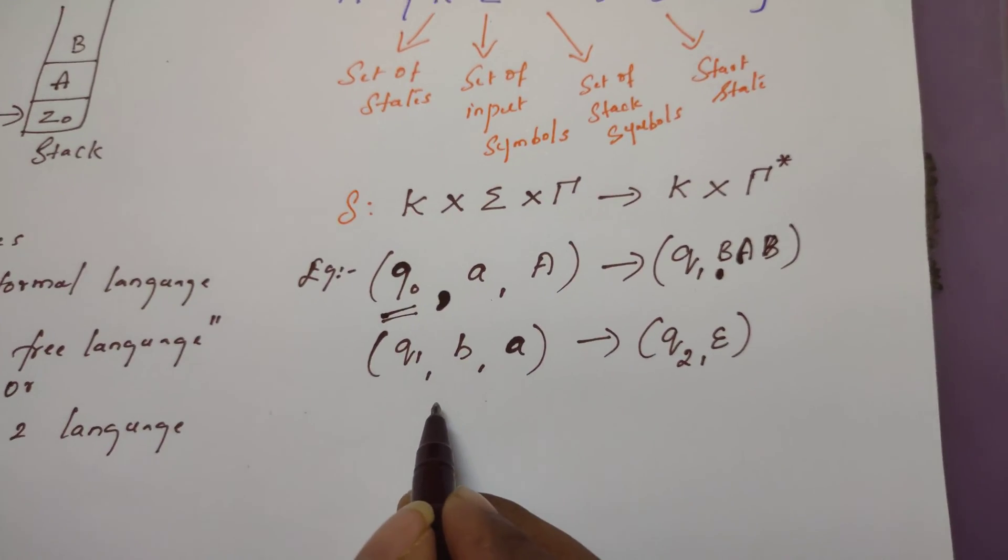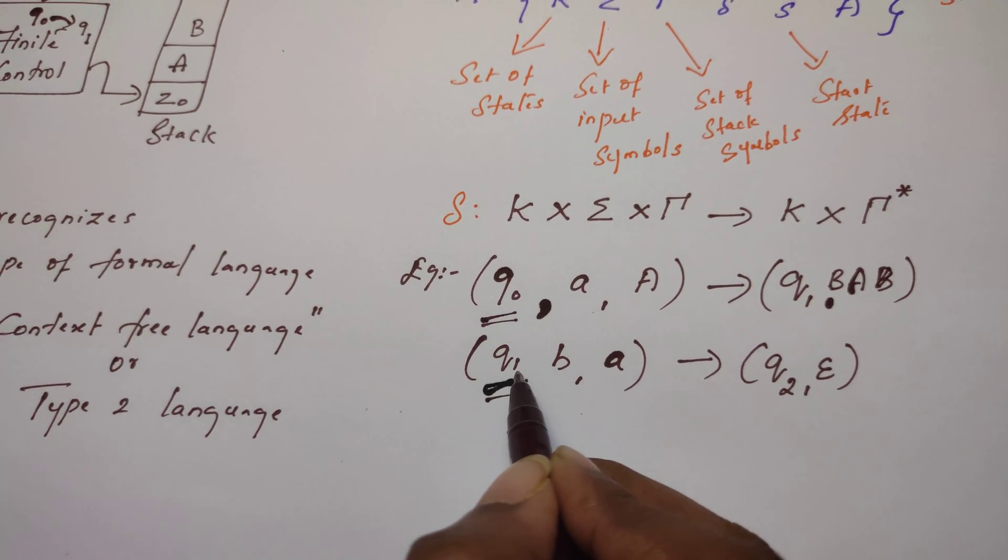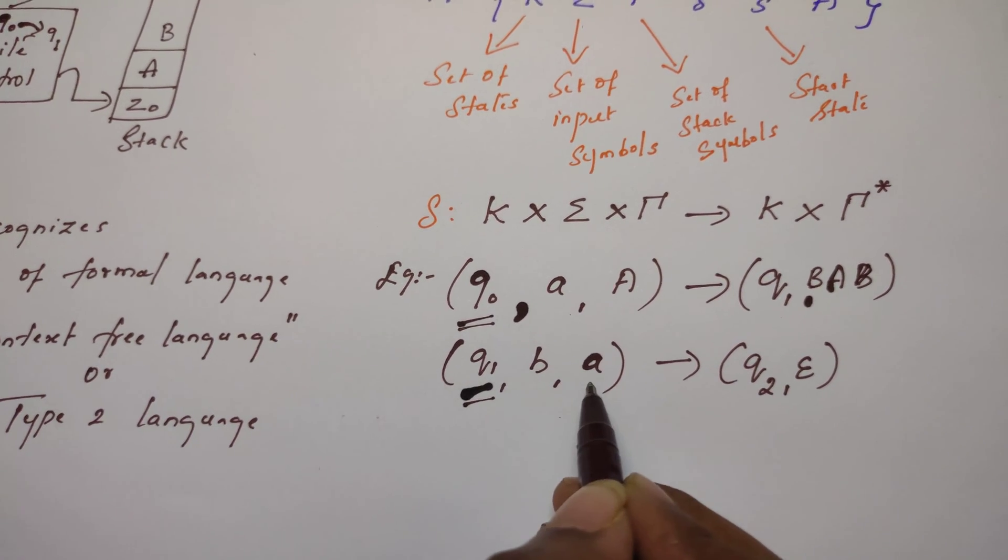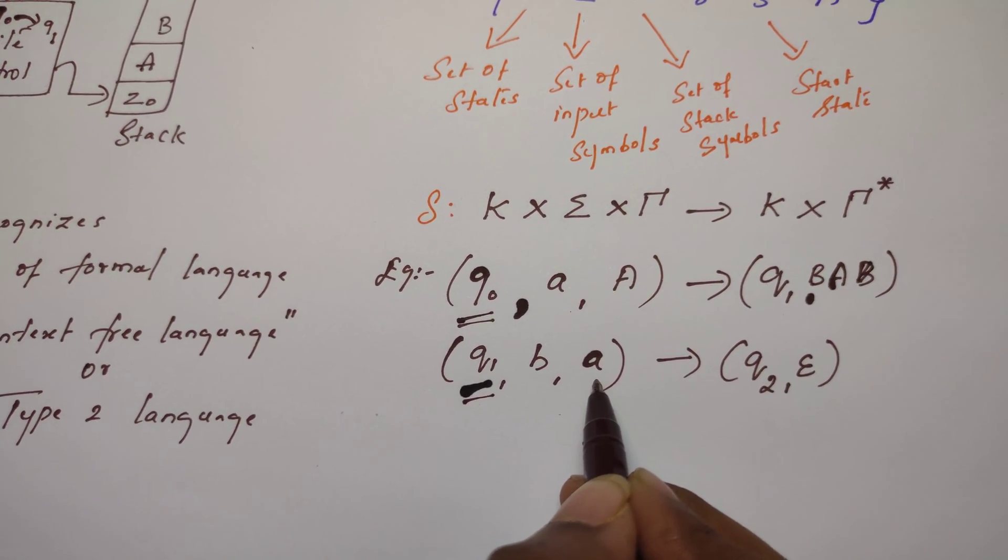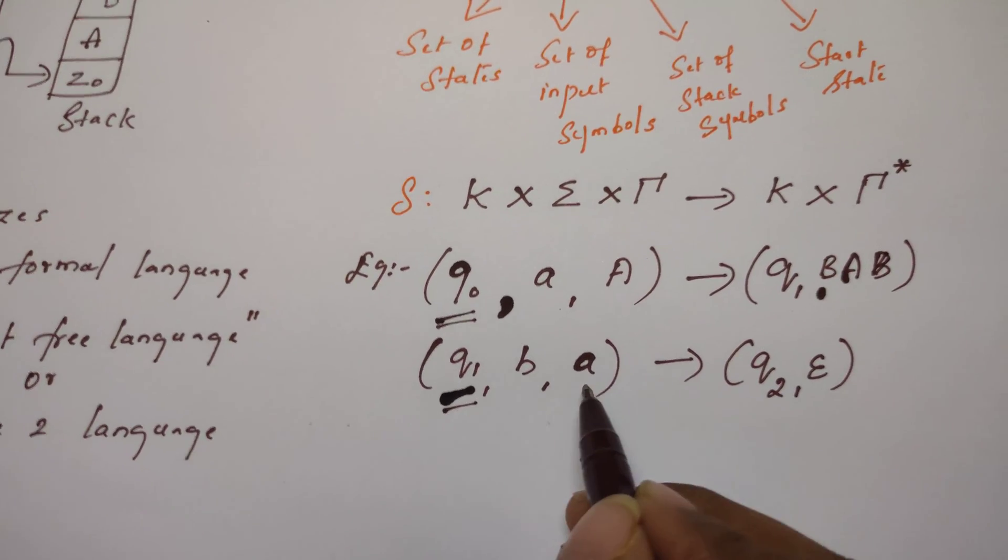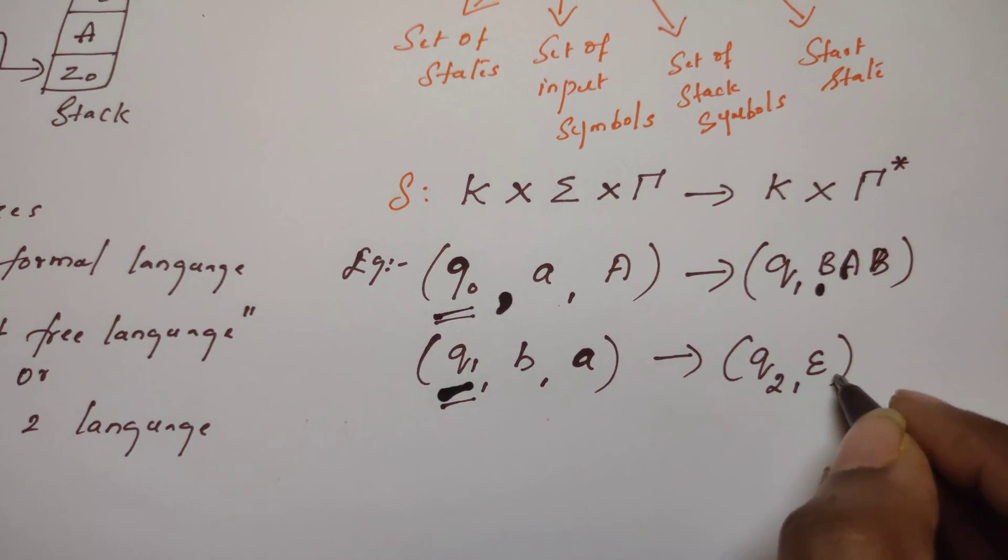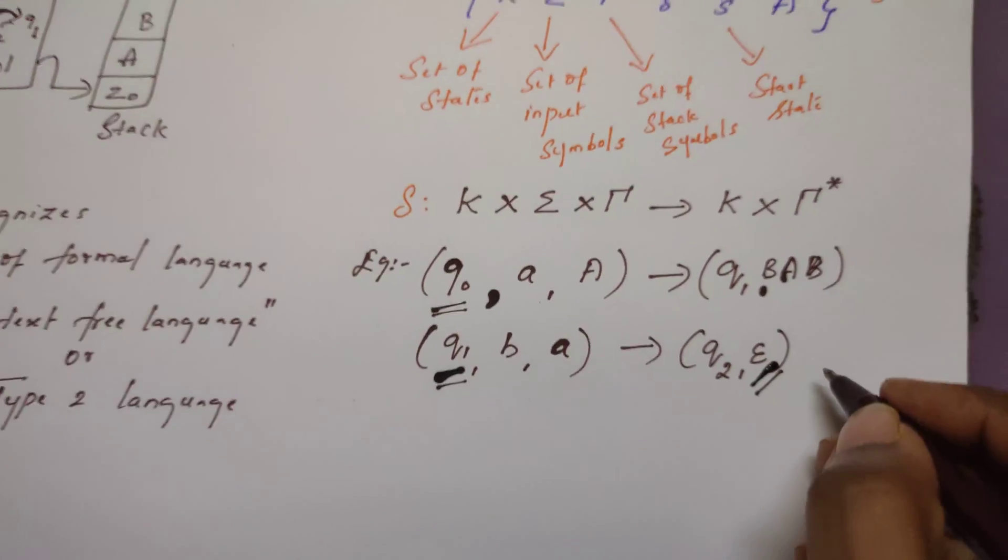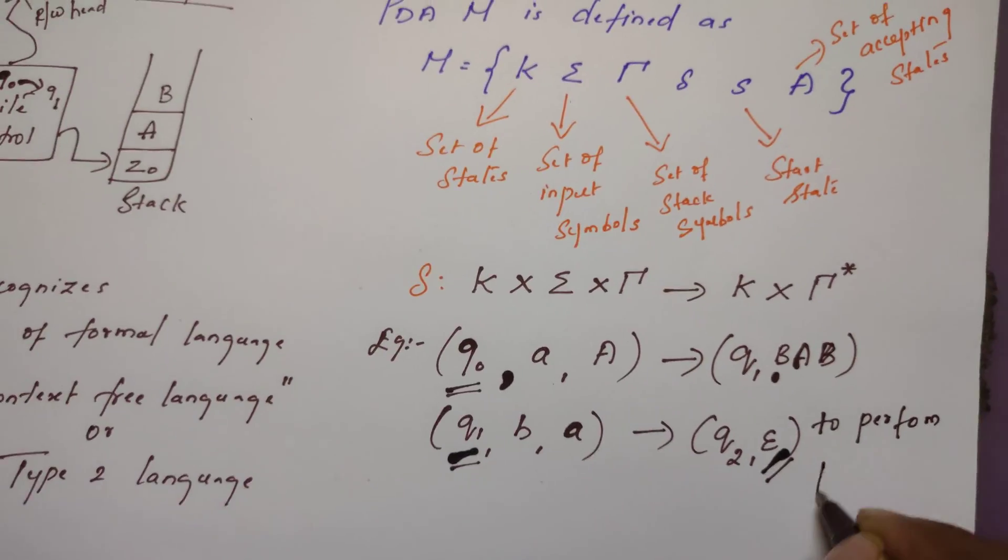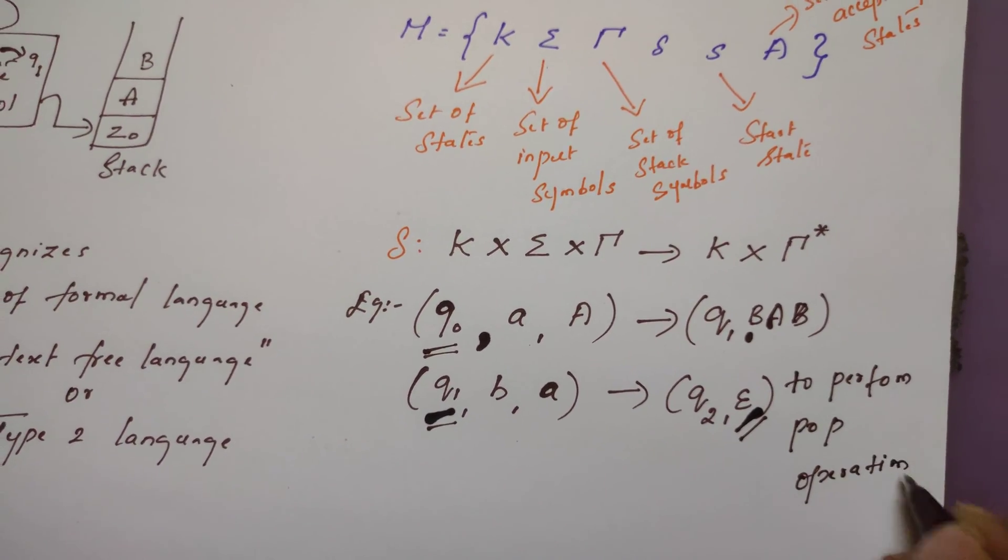Let us see another example. Consider the current state of PDA is Q1. Imagine it reads B from the input tape; at the same time, the top of the stack contains A. Now the state of PDA is changed to Q2 by popping whatever is available at the top of the stack. This epsilon indicates to perform a pop operation on the stack, so whatever is available at the top of the stack is removed.